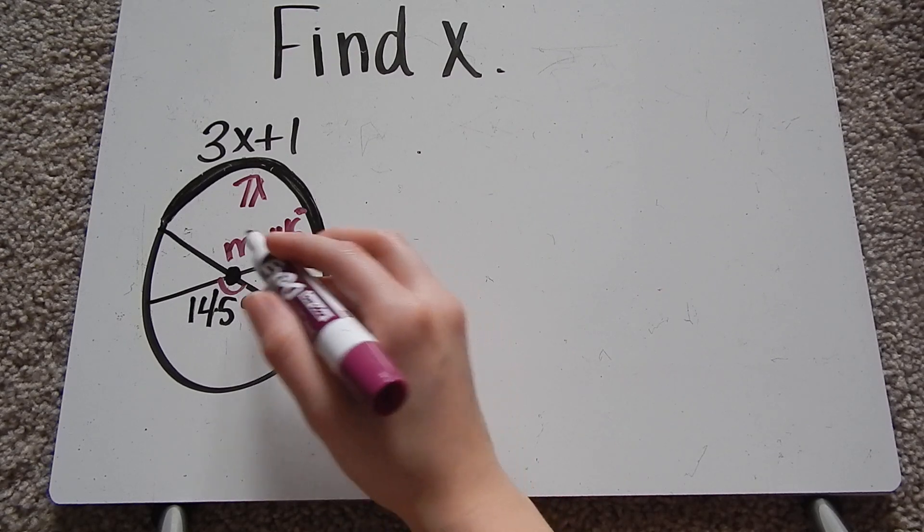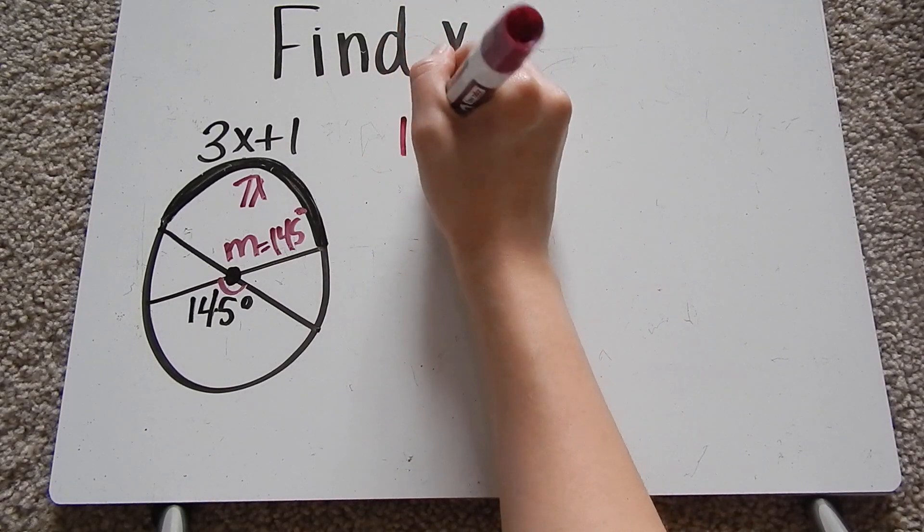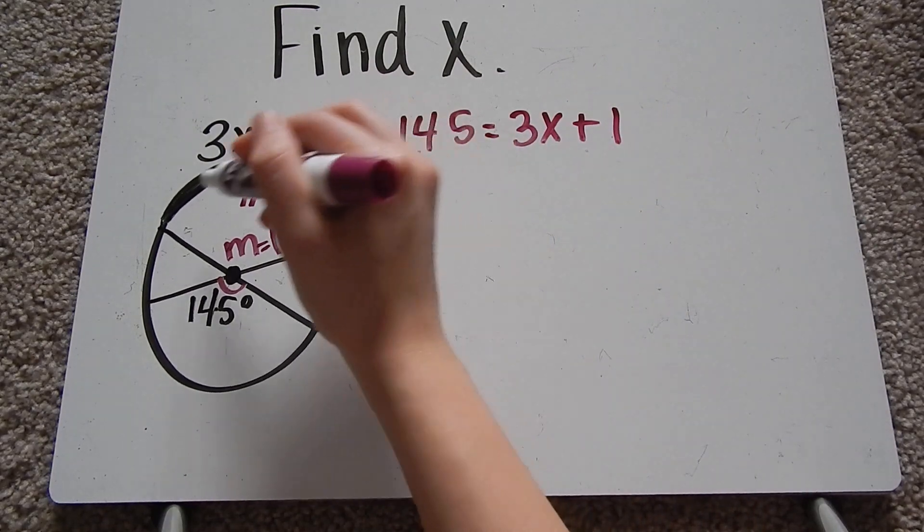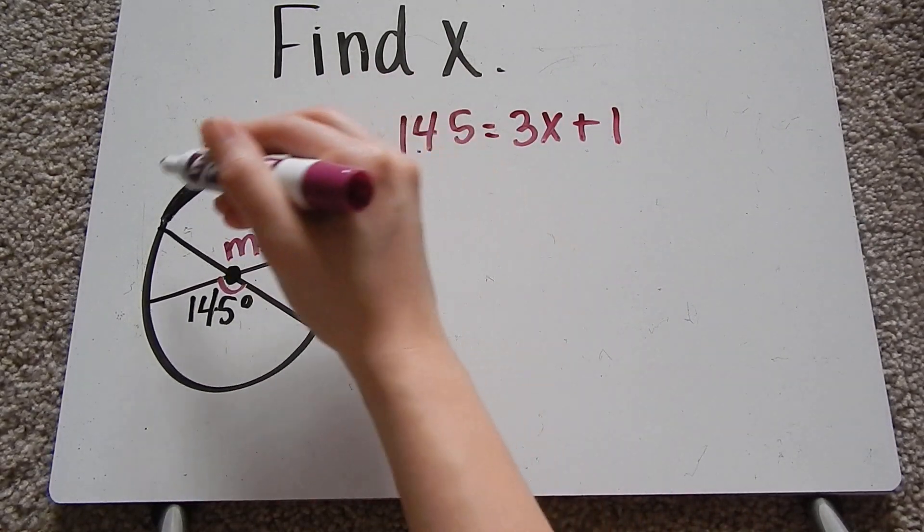So 145 is this measure, which means 145 is equal to 3x plus 1 because this entire thing is also 145.